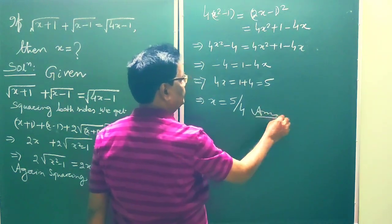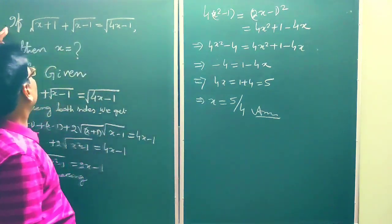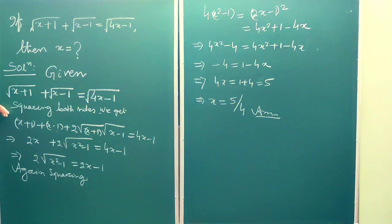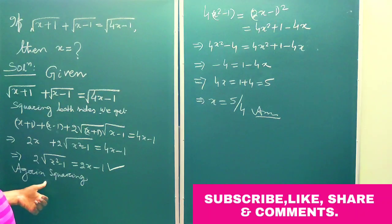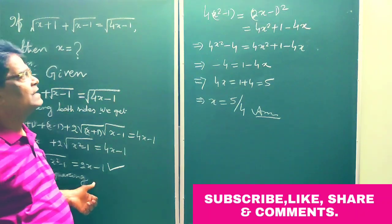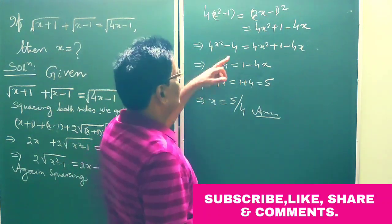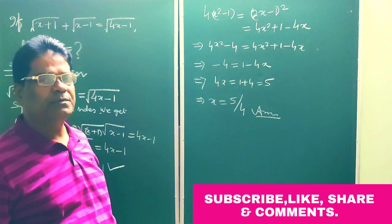Answer. So the question was: if the whole root of (x plus 1) plus the whole root of (x minus 1) equals the whole root of (4x minus 1), what is the value of x? After squaring both sides and simplifying, we get 4x equals 5, so x is equal to 5 by 4.